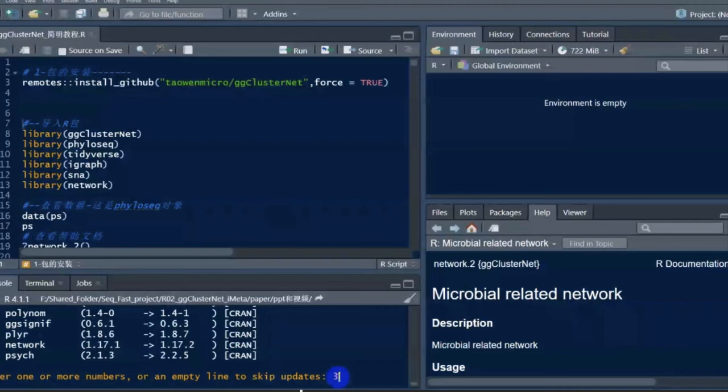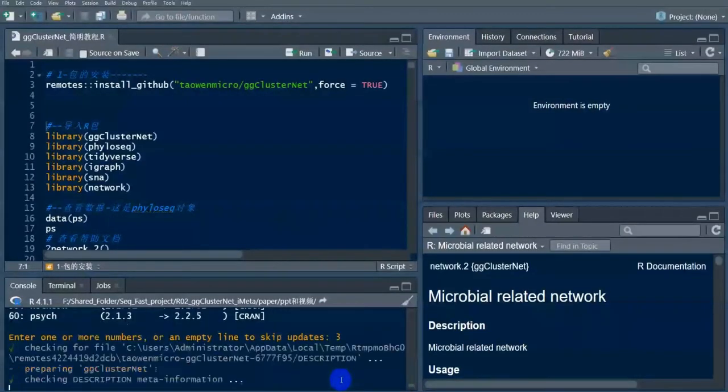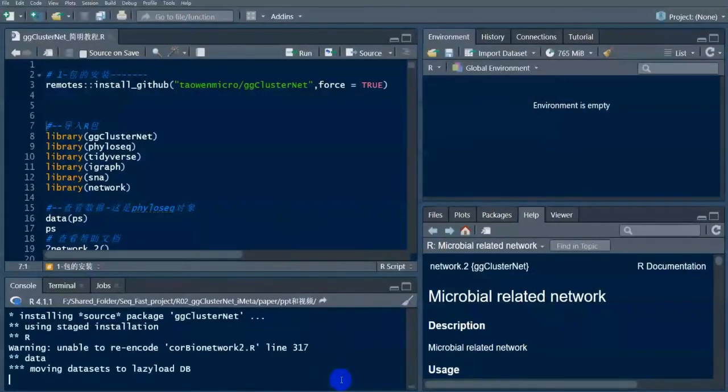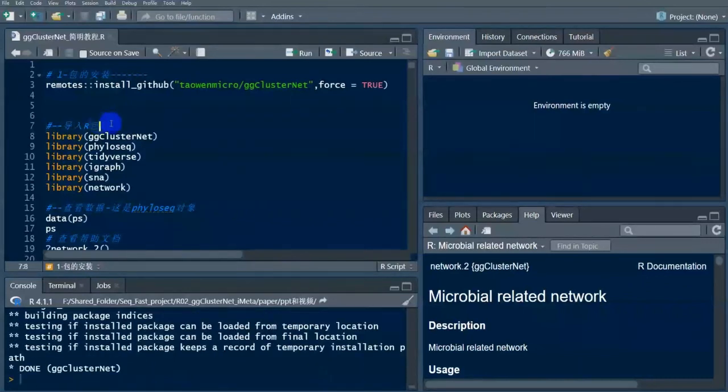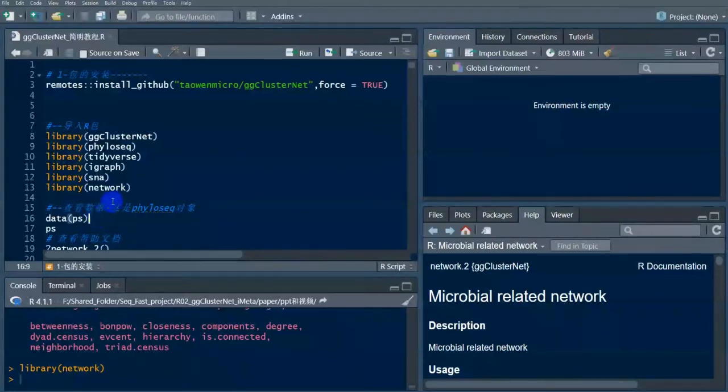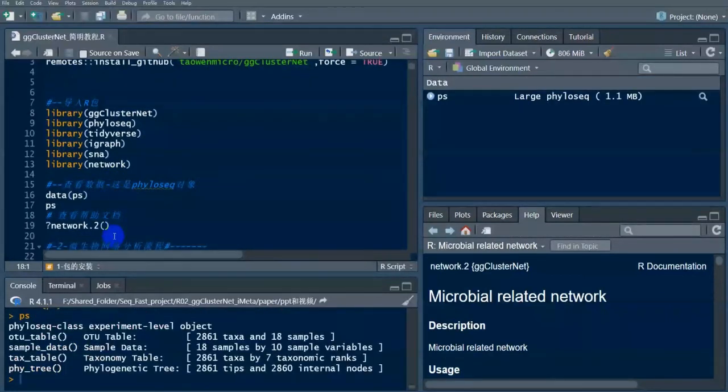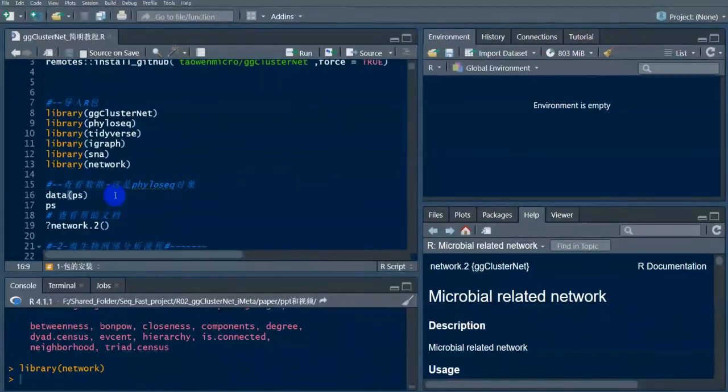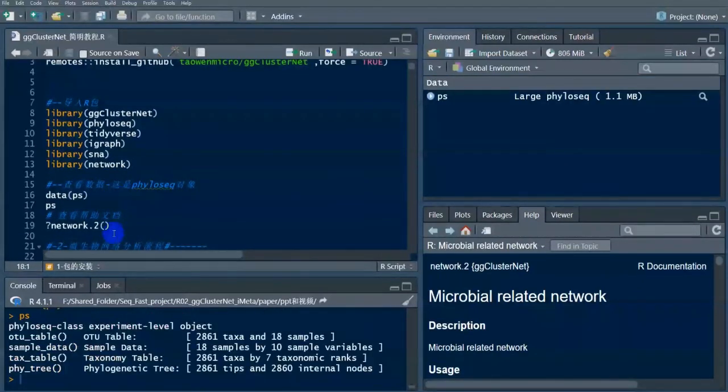Now we make a brief demonstration of the installation and use of GGClusterNet. First, we install the GGClusterNet package. At present, GGClusterNet only provides the installation method on GitHub. Select three during the installation process and do not make any modifications to other packages. After installation, import all the R packages required for GGClusterNet analysis.